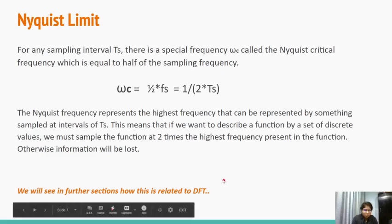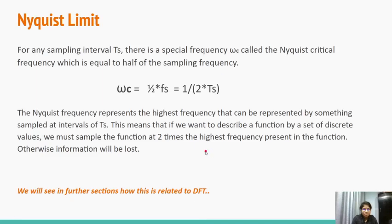The Nyquist limit. From the Nyquist sampling theorem, we know that for any sampling interval Ts, there is a special frequency omega_c, called the Nyquist critical frequency, which is equal to half of the sampling frequency. The Nyquist frequency represents the highest frequency that can be presented by something sampled at intervals of Ts. This means that if you want to describe the function by a set of discrete values, you must sample the function at two times the highest frequency present in the function.